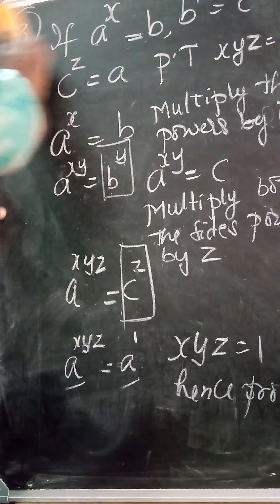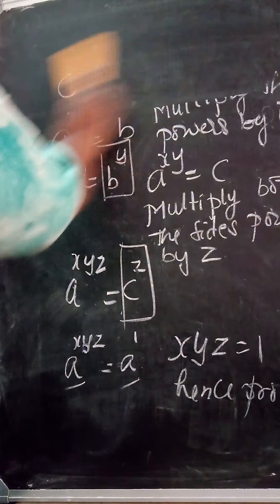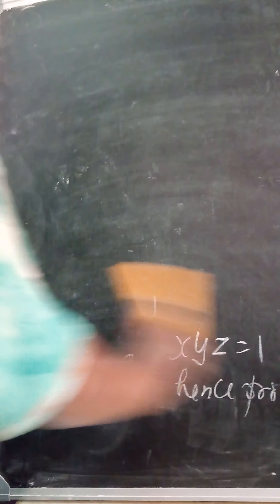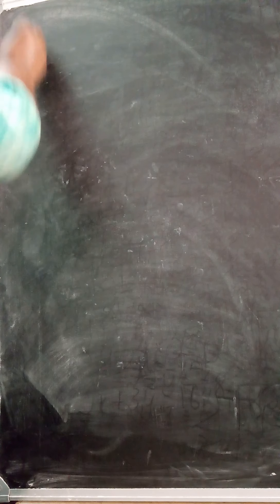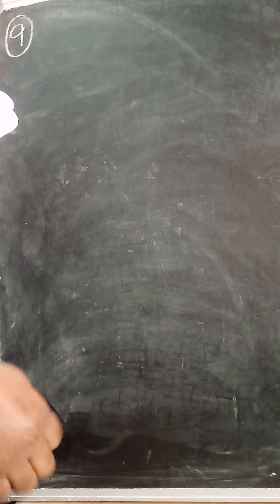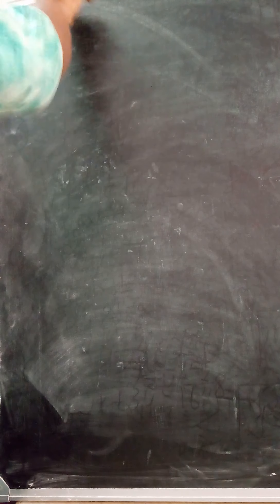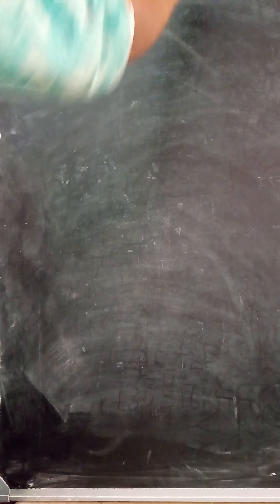We will move on to the next sum — the ninth one. Again a similar problem. This problem I had sent to you all, but some of you said you need to understand it. a raised to the power of x is equal to b raised to the power of y is equal to c raised to the power of z.